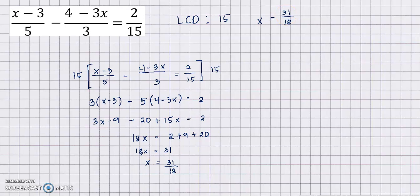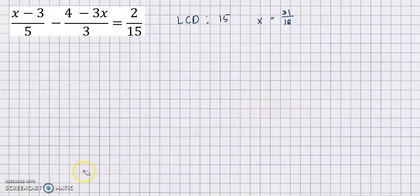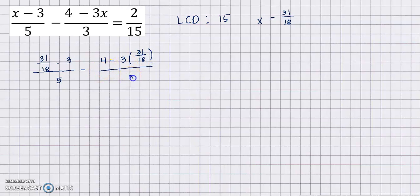We will check whether 31 over 18 is really the solution. Substituting into the equation gives: (31 over 18 minus 3) over 5, minus (4 minus 3 times 31 over 18) all over 3, equals 2 over 15. Simplifying the first numerator: convert 3 to a fraction with denominator 18 by multiplying 18 times 3 to get 54 over 18, giving 31 over 18 minus 54 over 18.